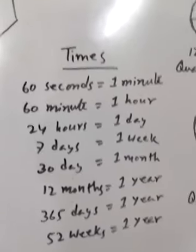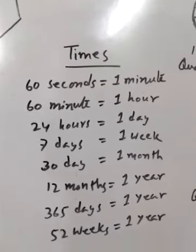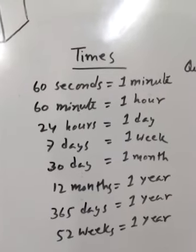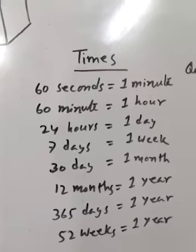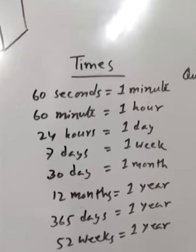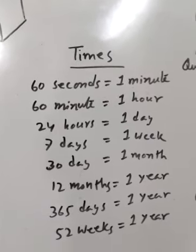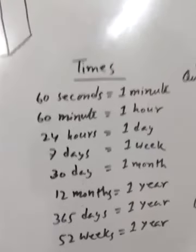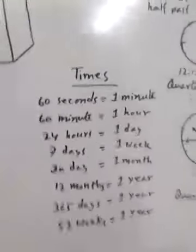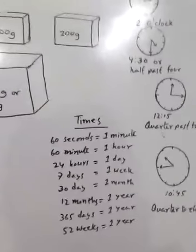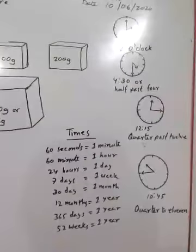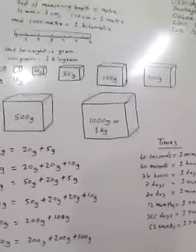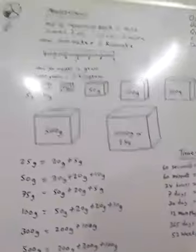You have to learn the names of the months in English: January, February, March, April, May, June, July, August, September, October, November, December. And you have to learn the Bengali month names also. March is the third month of the year, June is the sixth month, August is the eighth month.